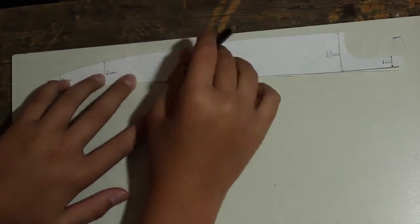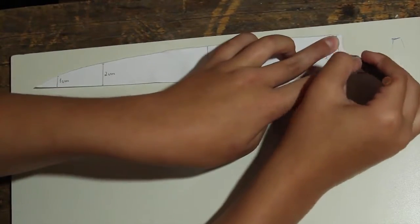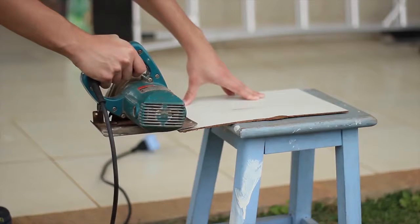Now draw the mold with the right measures on the wood or cardboard and cut it out.